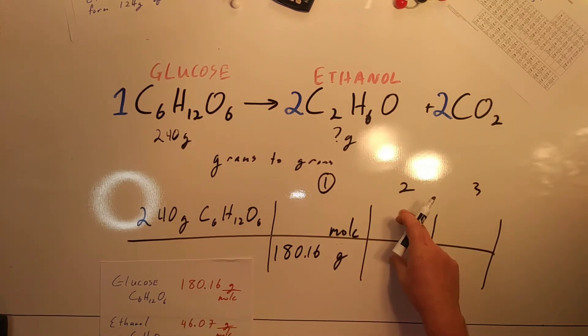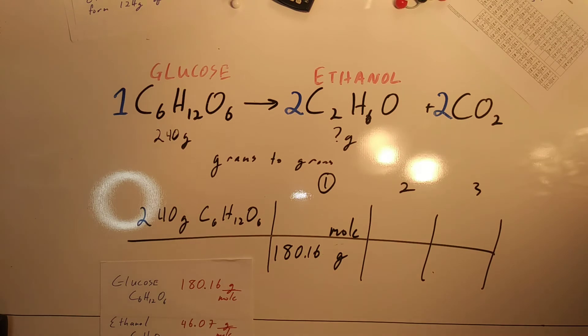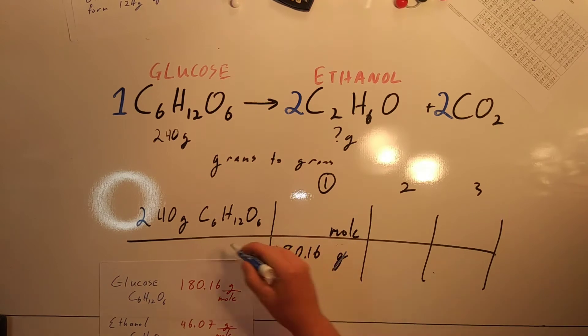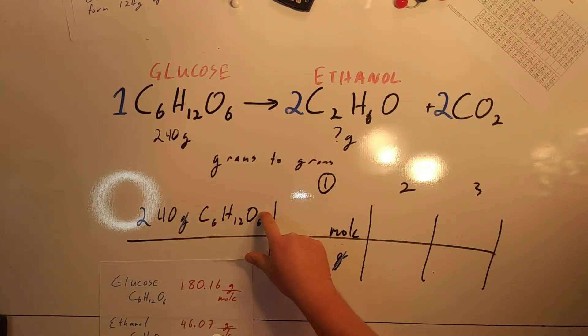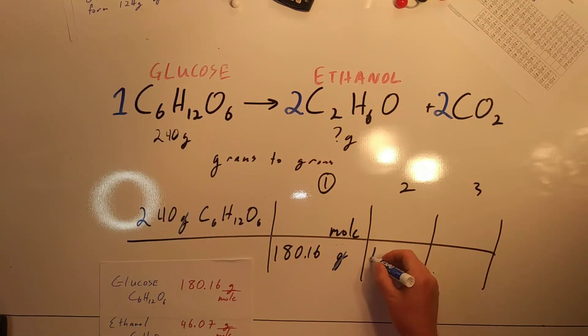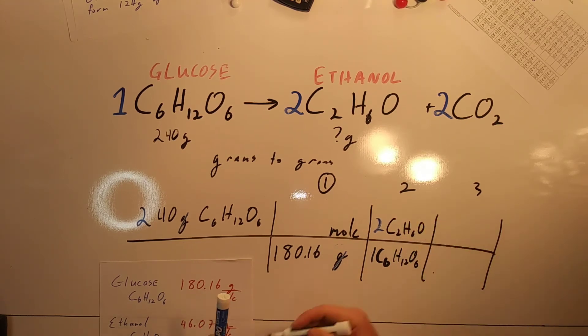In our second step, we use the balanced chemical reaction to cancel out another letter. Here in step one, the grams canceled. Here we're going to cancel out this word here. So we're going to use this whole thing from the balanced chemical reaction. These cancel out here.